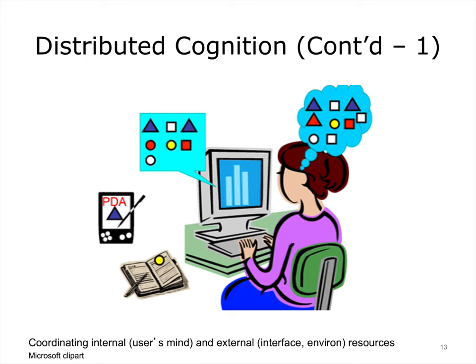Distributed cognition emphasizes the process of coordinating internal and external representations. As one becomes a more skilled user, the process of coordinating such representations becomes more effortless. A more optimal design will strive to find the right balance. A display that offers every single function on the first screen endeavors to maximize the availability of external resources, but the downside is that the display is likely to be so cluttered that finding the right button or link could prove difficult. A system that necessitates that you recall complex query commands has the opposite effect of requiring that you rely entirely on your memory or internal resources. Neither option is optimal.